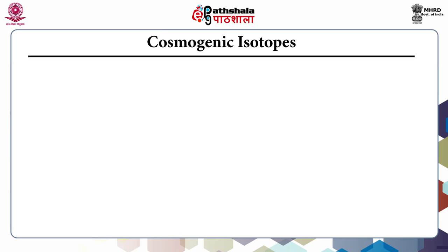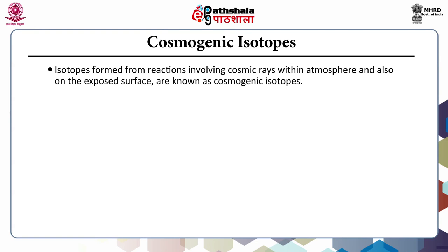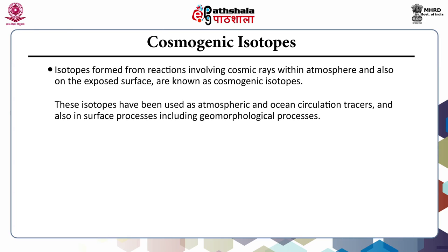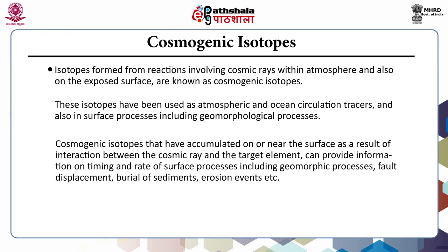Cosmogenic isotopes are formed from reactions involving cosmic rays within the atmosphere and on exposed surfaces. These isotopes have been used as atmospheric and ocean circulation tracers and in surface processes including geomorphological processes. Cosmogenic isotopes accumulated on or near the surface can provide information on timing and rate of surface processes including geomorphic processes, fault displacement, burial of sediments, and erosion events.